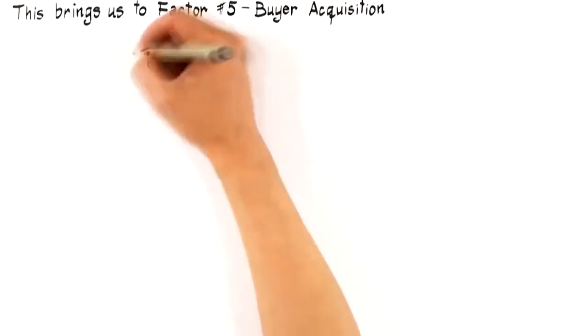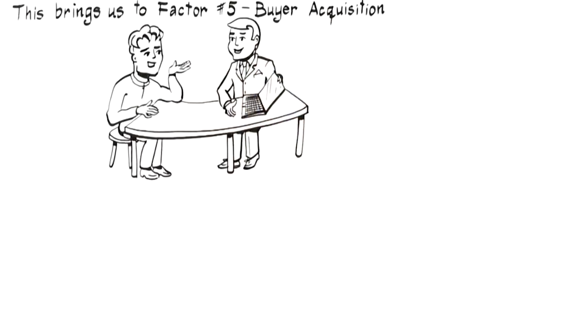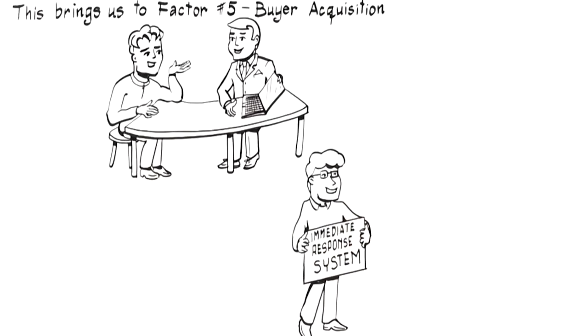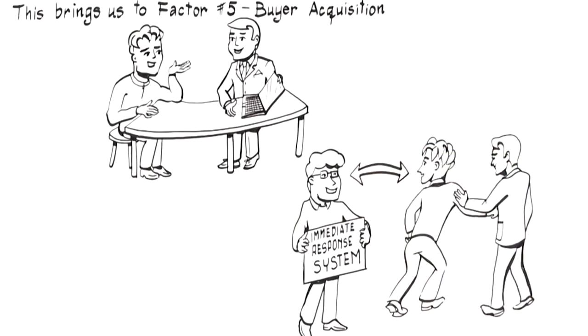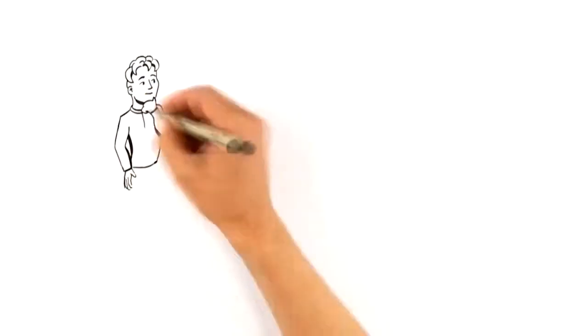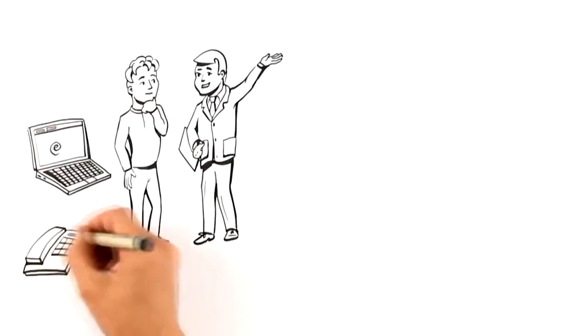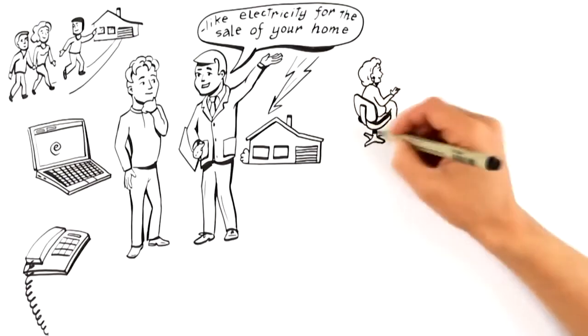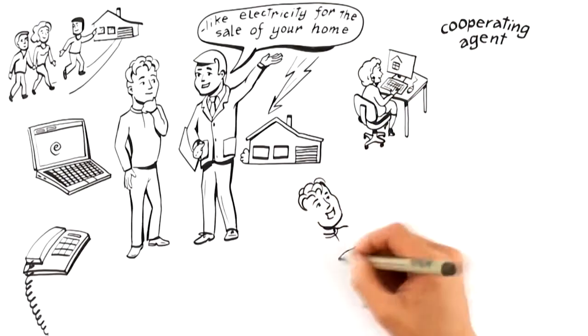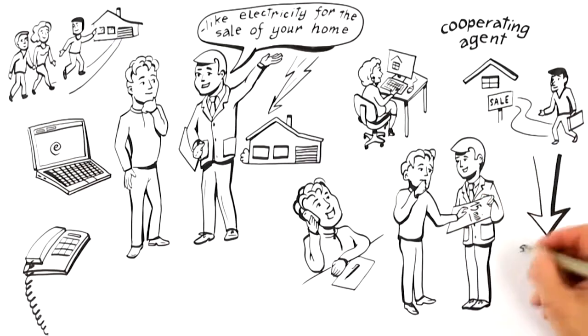This brings us to factor number five, buyer acquisition. With your home differentiated to attract top dollar offers, a strong marketing budget in place to expose your home to targeted buyers, and an aggressive plan to motivate cooperating agents to bring you their best clients, hiring a professional who has developed an immediate response system is critical to acquiring a buyer for your home. Think of this like the circuit breaker in your house. Emails, calls, and showings are like electricity for the sale of your home. So without a system to process and qualify their flow, you risk shorting out a top dollar offer. Here's why. When a buyer visits your home online, a cooperating agent calls to set up a showing, or someone calls from your yard sign, studies repeatedly show the fastest response wins the deal. Anything more than 15 minutes lowers the chance of your agent making contact and decreases showing your home by up to 105 times.